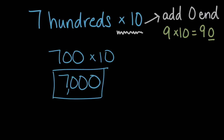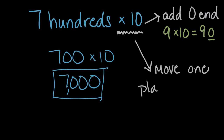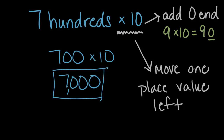But there's another pattern we could use here. Another pattern to think about when we multiply by ten is that when we multiply by ten, we move every digit one place value to the left, or one place value greater. Let's look at that one on a place value chart.